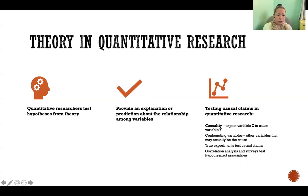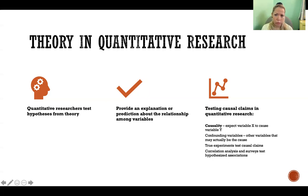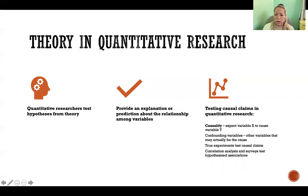Causality means that we expect one variable to cause a change in another variable, which is different from an association or correlation where we're just talking about one variable having a relationship with another variable where we can't necessarily demonstrate causality. A confounding variable would be a variable that may actually be the cause.